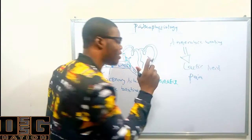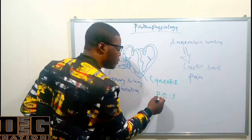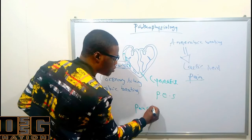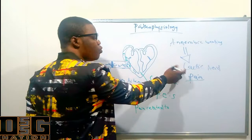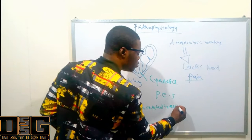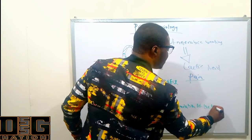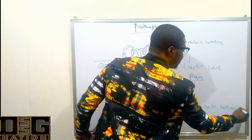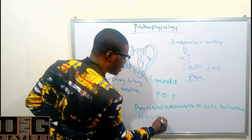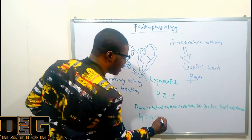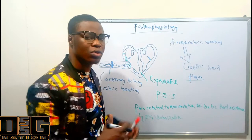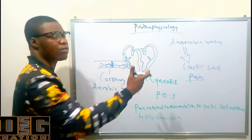From the pathophysiology, you can draw a nursing care plan. Remember in nursing diagnosis we use the PES format: Problem, Etiology, and Signs/symptoms. The problem here is pain, related to accumulation of lactic acid in the myocardium, as evidenced by patient verbalization. That is how you write a nursing care plan based on pathophysiology.